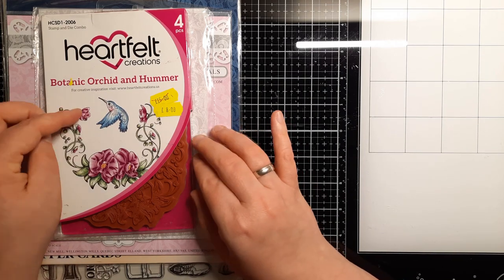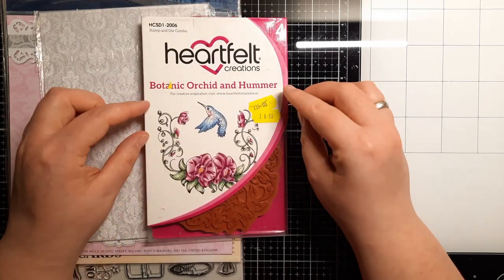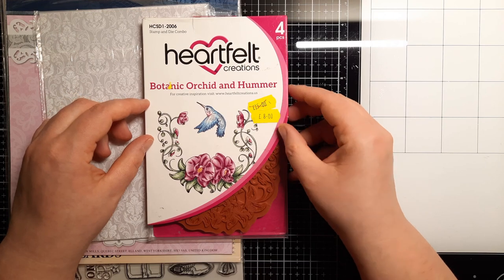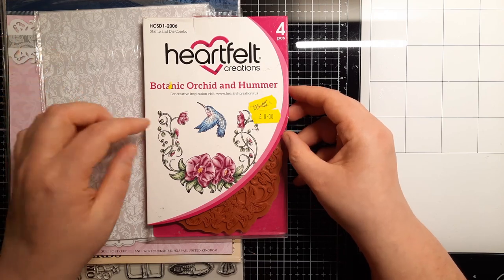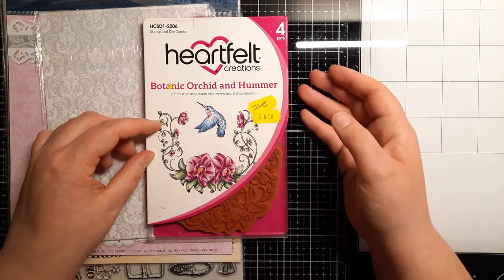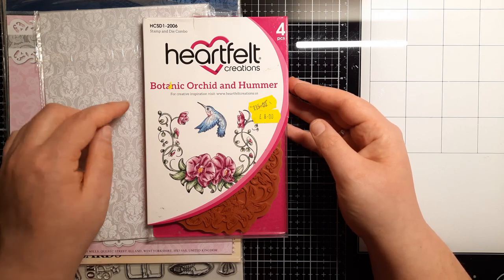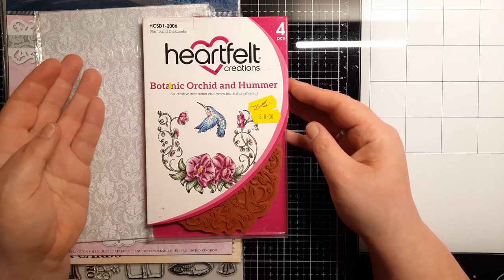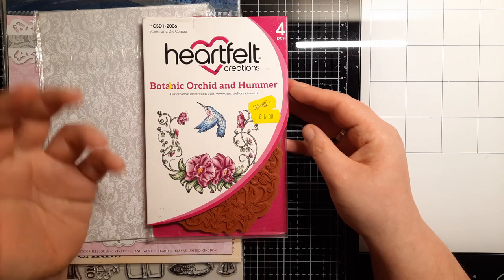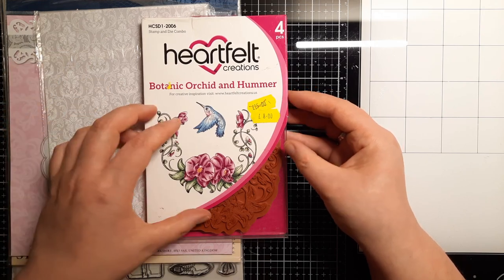The next item I bought was from Heartfelt Creations. I absolutely love this brand but it is so expensive. So when I saw that orchid stamp I couldn't resist because I teach at school and actually my class is called Orchid Class, so I thought this would be perfect to use to create something with my students.